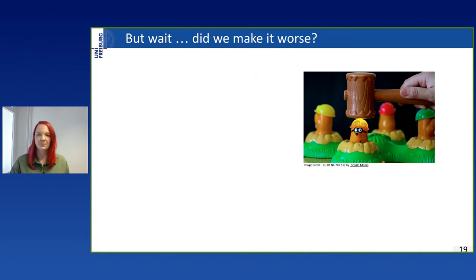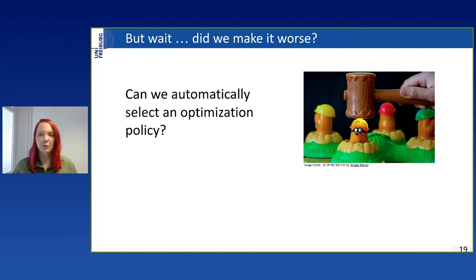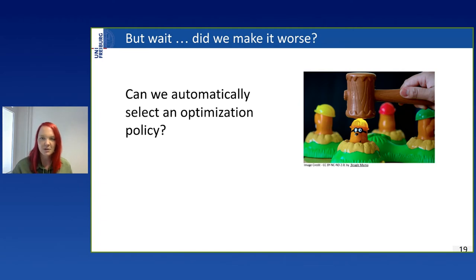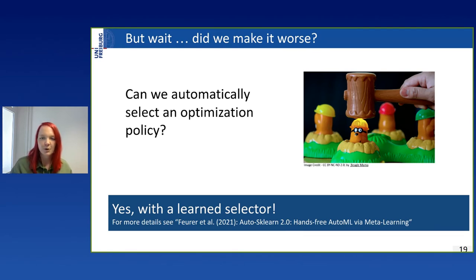So did we make it worse? AutoML aims at making machine learning easier, but now there are even more hyperparameters — did we solve one problem and create more? Can we automatically select the optimization policy? That's what we covered in our latest research, and the short answer is yes — that's possible. We can do this with the LearnSelector.